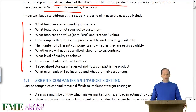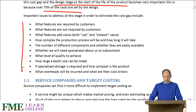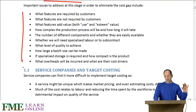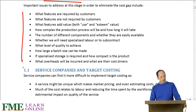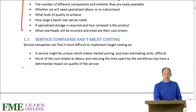We might think about a variety of questions at the design stage. What features are required by customers? What features are not required? What features add value — meaning either very useful to customers, or providing esteem value that customers will pay extra for? How complex will the production process be, and how long will it take? How many components are needed, or could they be self-assembled or brought together as already complete sub-processes? Whether we need specialised labour or could subcontract it? What level of quality do we want to achieve? How large a batch size? And if we need specialised storage, how compact is the product?